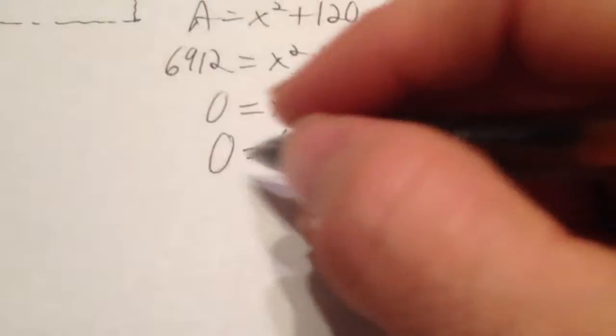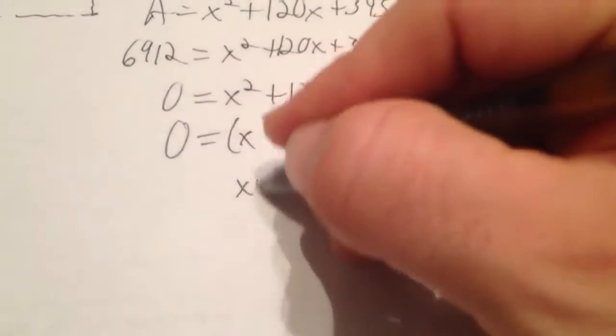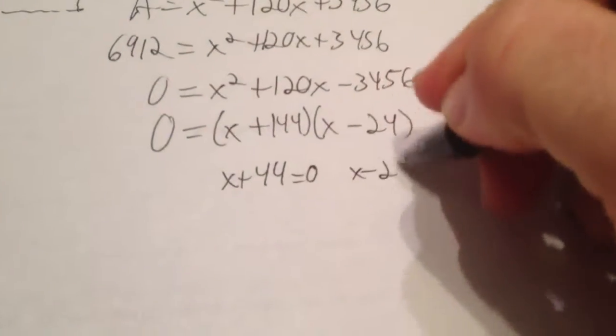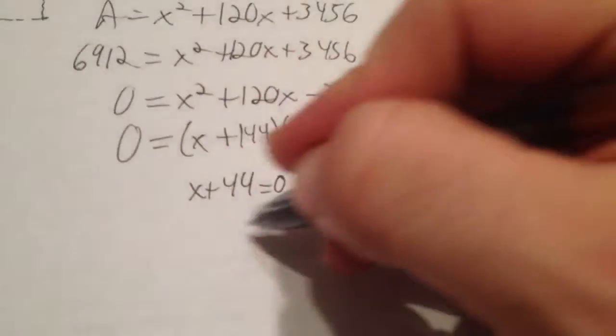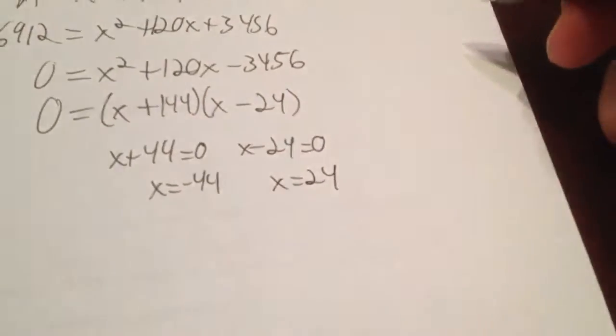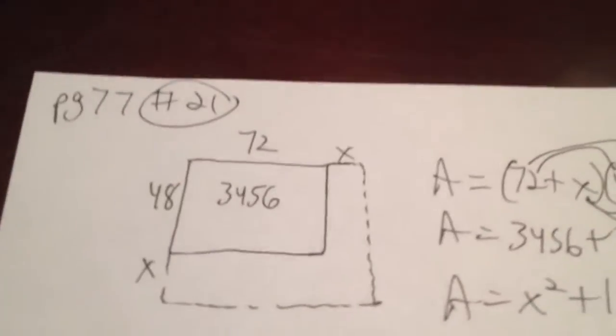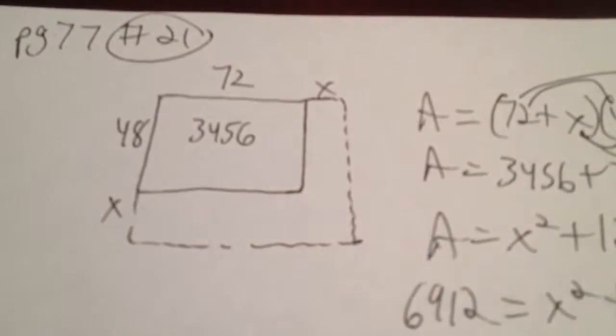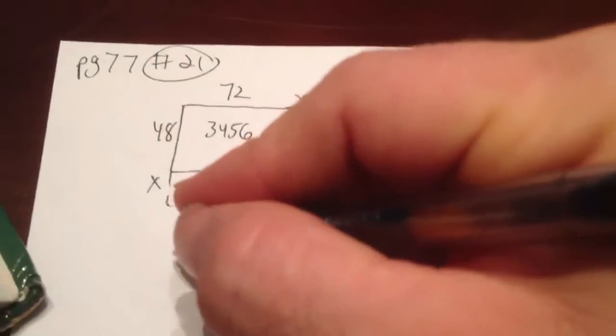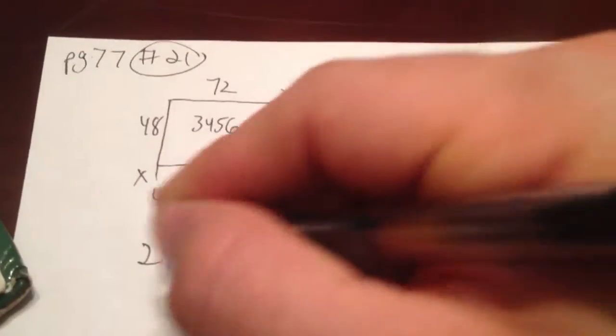So then, once you get these equal to 0 like this, to solve by factoring, remember, set it equal to 0. Set it equal to 0. And you get negative 44 and positive 24. So which one's got to be the answer on this one? Well, you're talking about extending the playground. So it has to be 24 feet. So what you would want to extend the playground by is 24 feet.